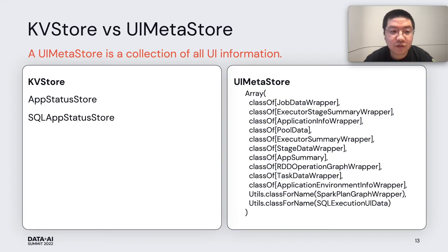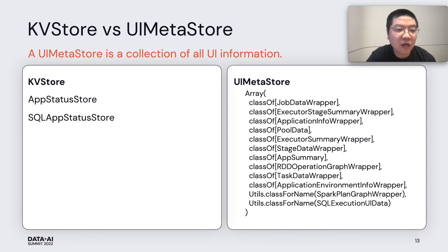Let's go to the implementation part. First, we implement a UI Meta store like the KV store. A UI Meta store is a collection of all UI information. Compared to the KV store, it also contains some events, but this is in memory, and we filter out things we don't need and only keep the information we want to display in the UI service.